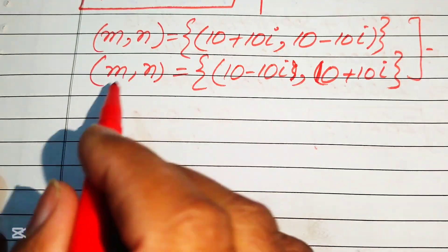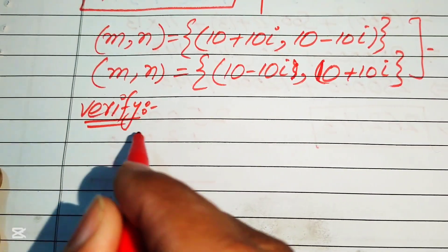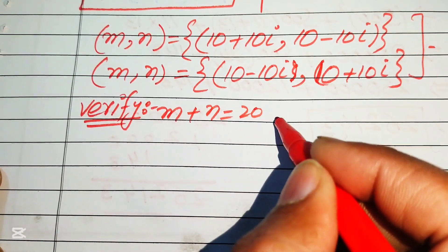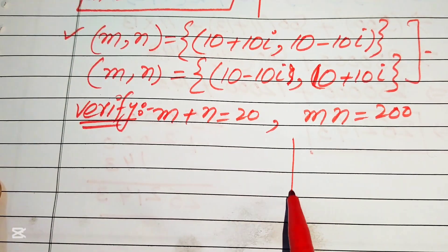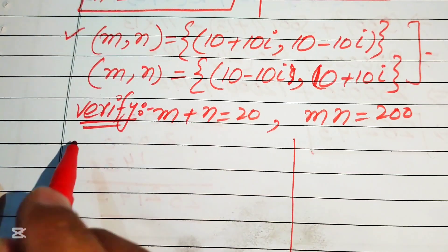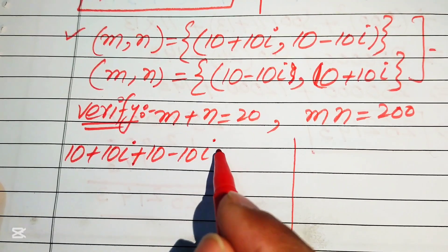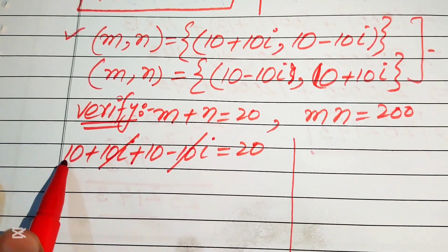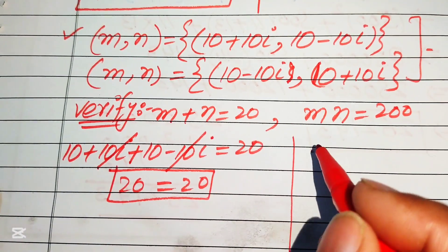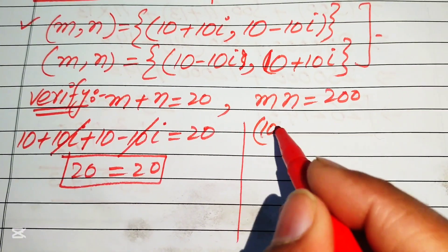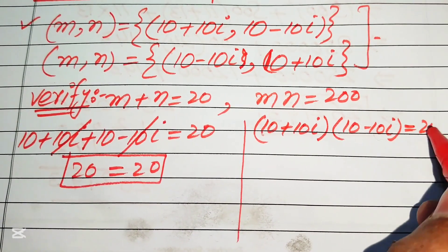Now we verify these solutions against the original equations: m plus n equals 20 and m times n equals 200. For the first solution: (10 plus 10i) plus (10 minus 10i) equals 20 — the imaginary parts cancel and 10 plus 10 equals 20. This confirms the first equation. Next we check m times n: (10 plus 10i) times (10 minus 10i) should equal 200.